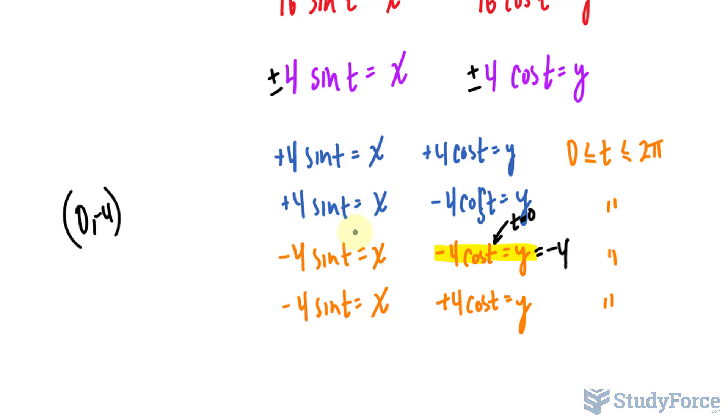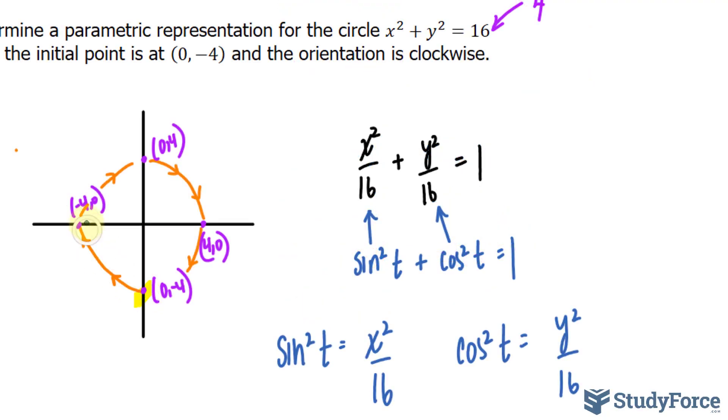If I were to substitute t is equal to 0 into any of these, I get an output of x is equal to 0. Now, does that mean you can have both positive 4 and negative 4 as the other parametric equation? The answer is no, because the circle itself, it is increasing. From the initial point, it is increasing.